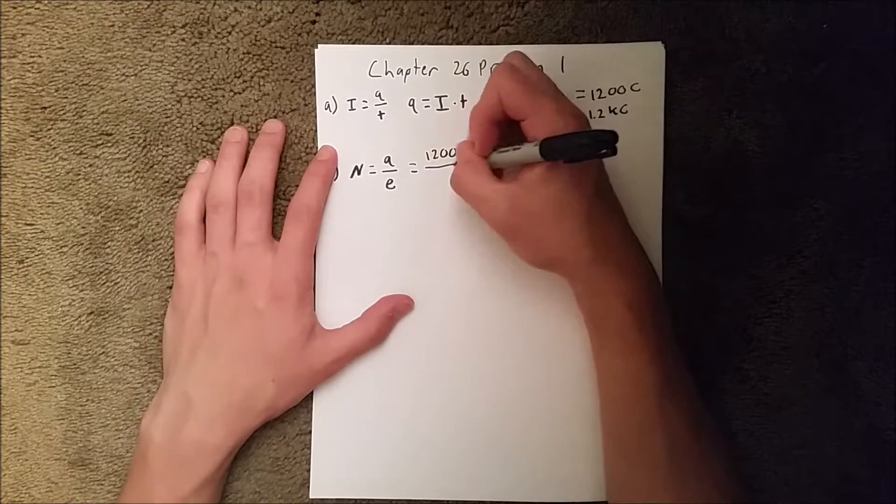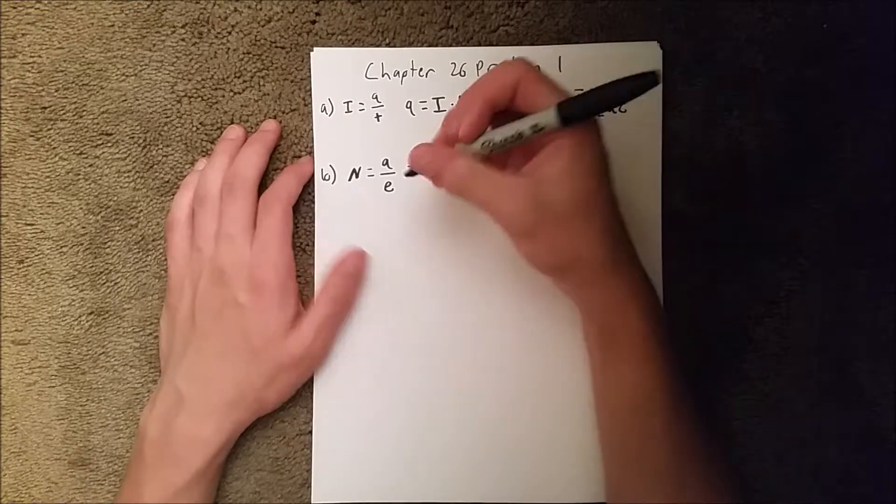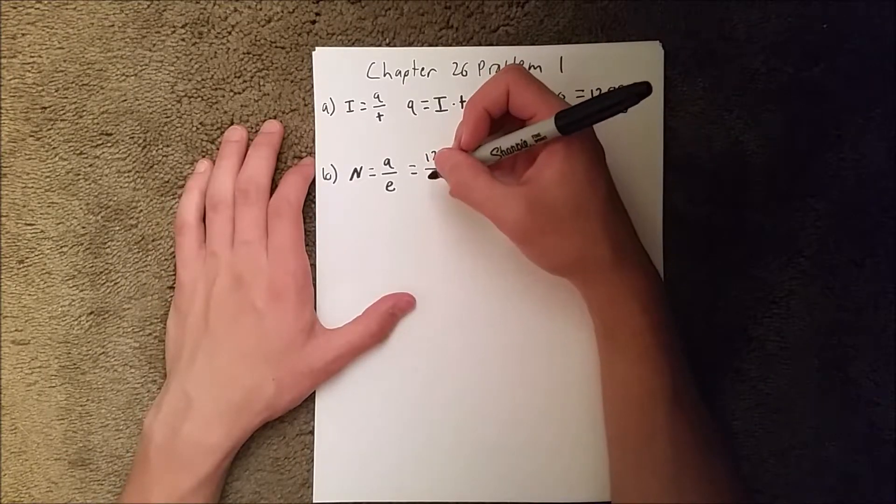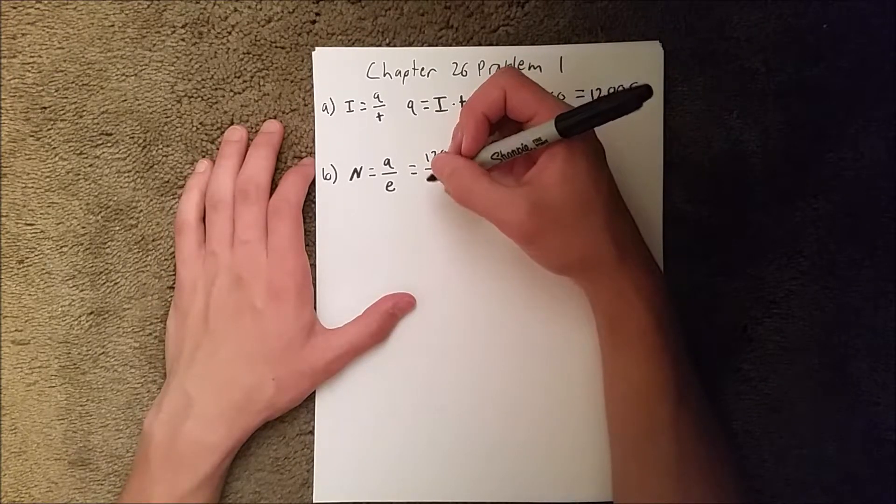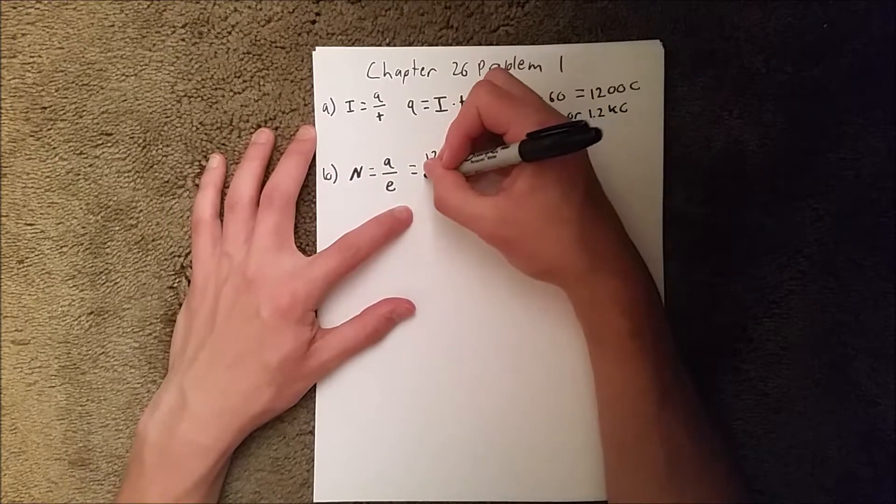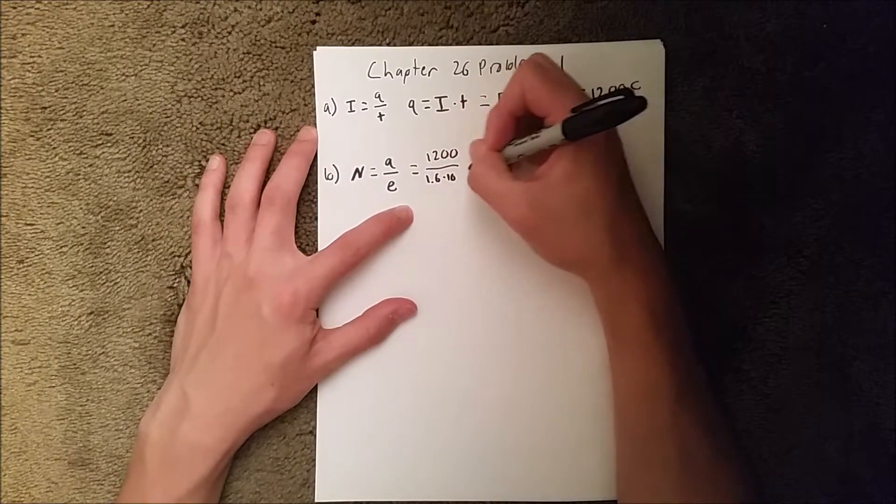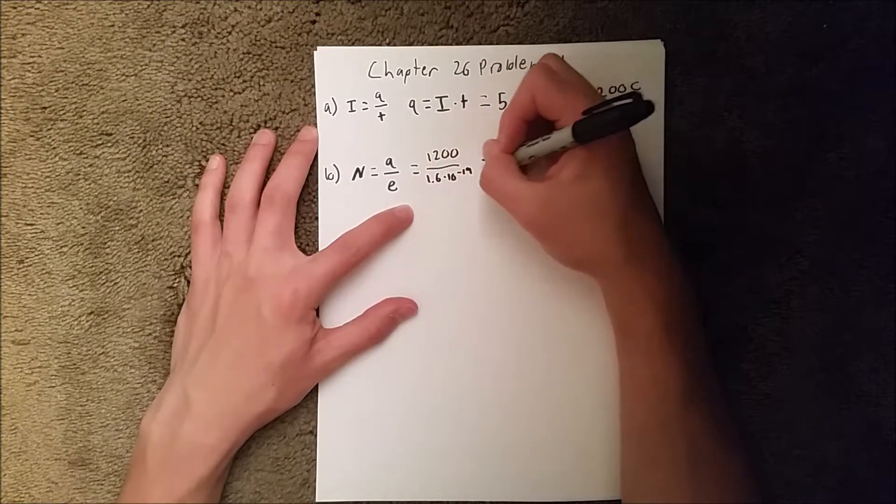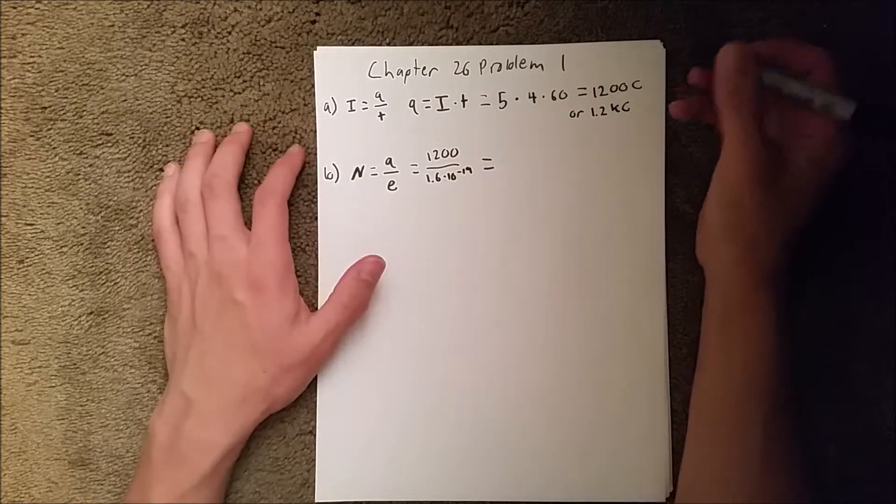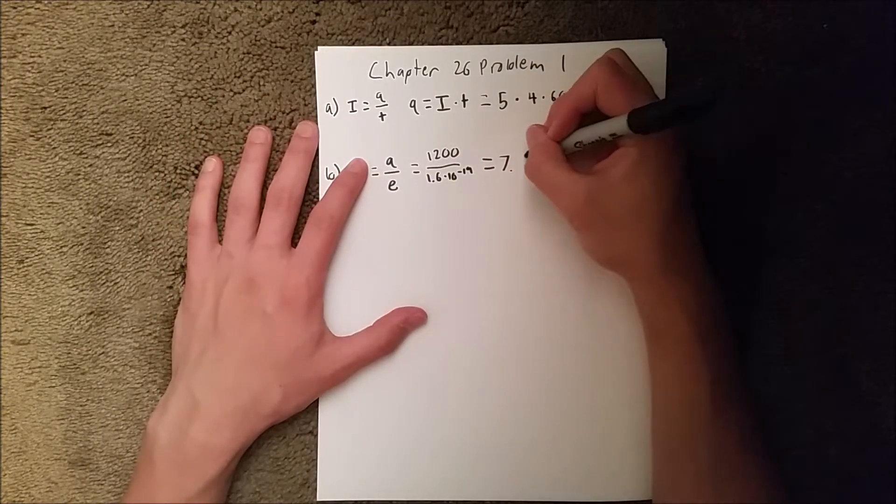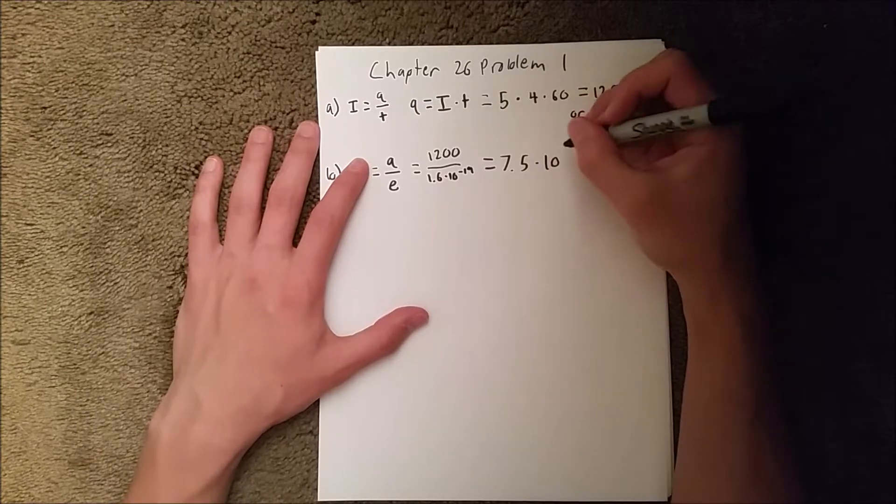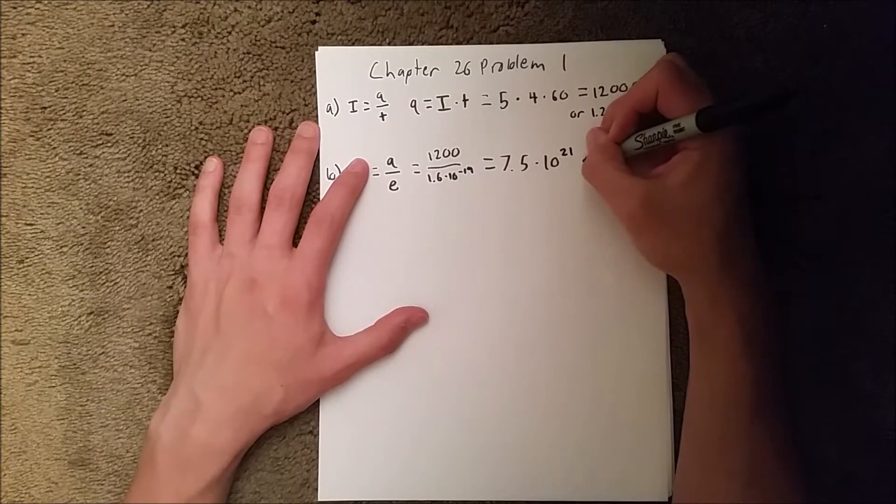That is 1200, and then our e-value, which is a constant, is 1.6 times 10 to the negative 19th. When you plug it into your calculator, you should get 7.5 times 10 to the 21st electrons.